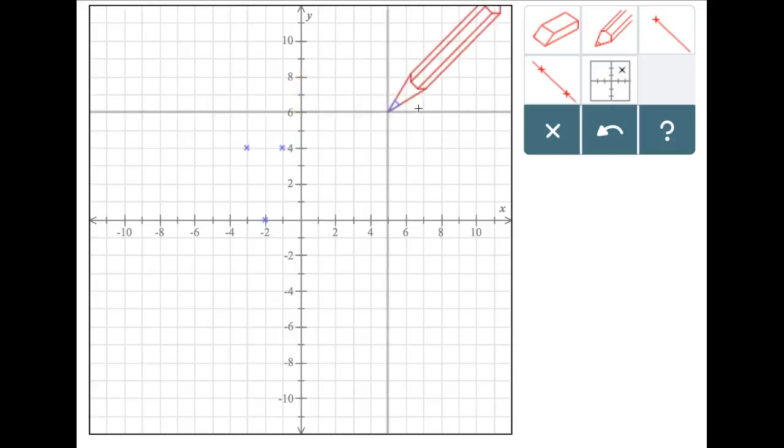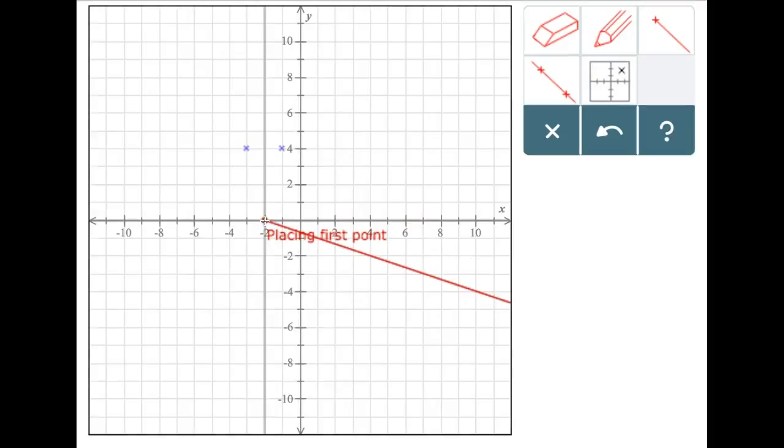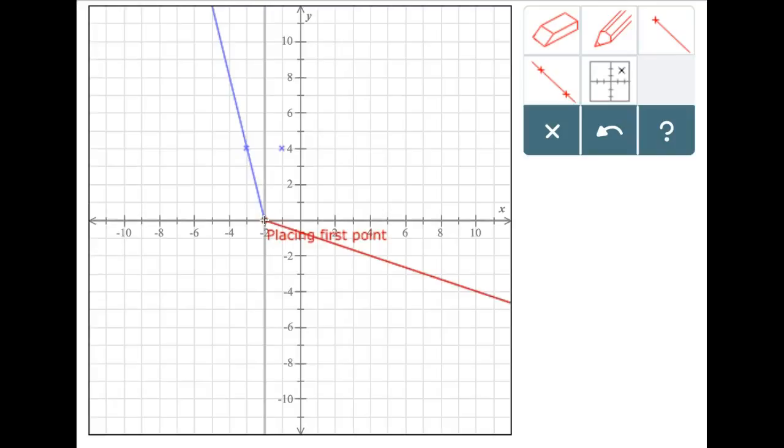Now, we will need to make two rays going from the vertex. The first ray going from the points negative 2, 0, and negative 3 comma 4, and the second ray going through the points negative 2 comma 0, and negative 1 comma 4. And now, our absolute value equation has been graphed.